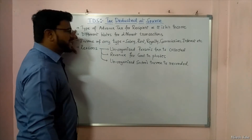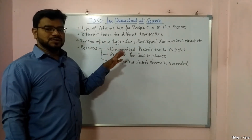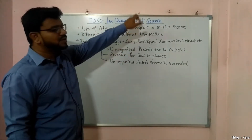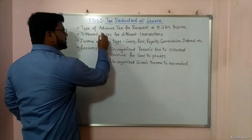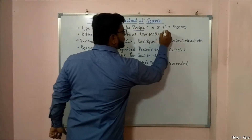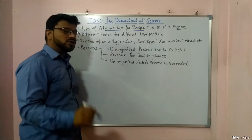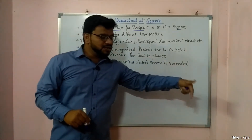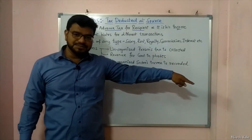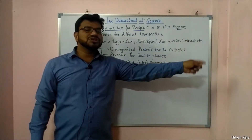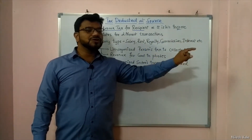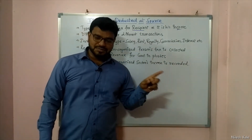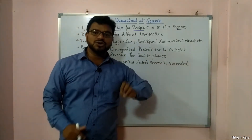TDS is a type of advanced tax for the recipient on his income. Please understand this. It is a type of advanced tax for the recipient on his income. If there is a recipient for whom I am making the payment, then for that person it is income. If it is income for him, then only TDS can be cut; otherwise you cannot cut TDS.